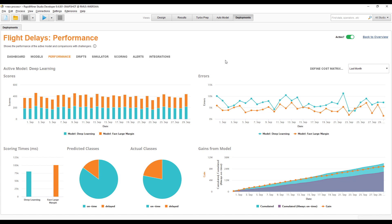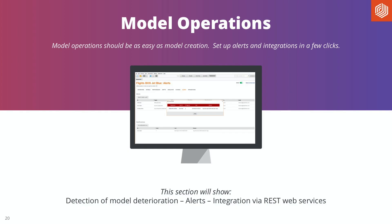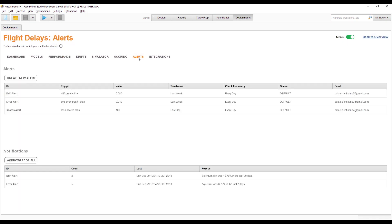Moving on to the last part: model operations. This is really about automating all the maintenance around deployed models — creating alerts, being aware when something is no longer working as expected, and integrating models into other pieces of your IT infrastructure. Let's jump right in. Here's the Alerts tab where I've already created three different alerts. The first is a drift alert: if drift is greater than 8% for the last week, checked once per day.